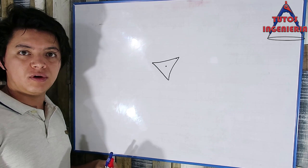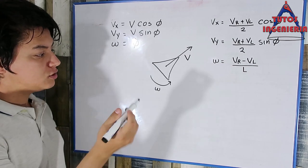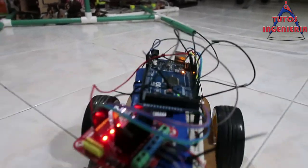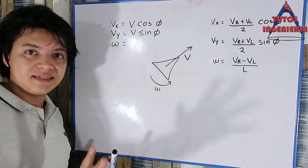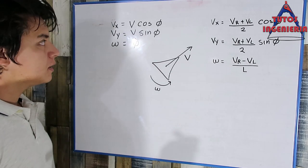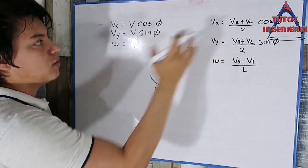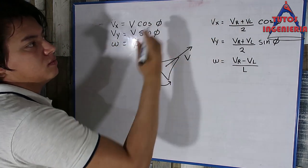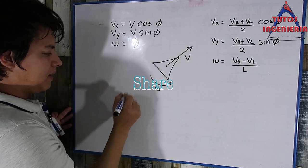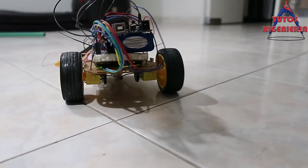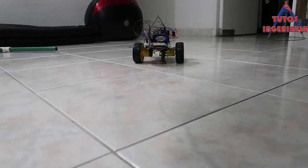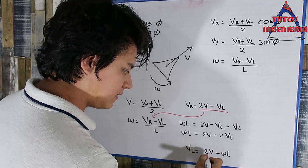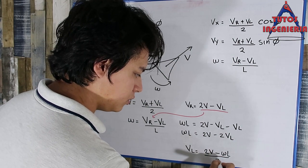Summarizing this video: we developed two important equations that describe the velocities of the wheels based on the linear velocity and angular velocity. These equations are required for the implementation on the Arduino platform. In the next video, we are going to talk about encoder technology, and then we will be ready to begin building and implementing this project. See you next time.